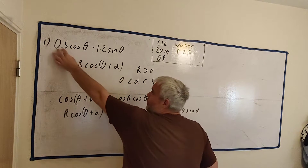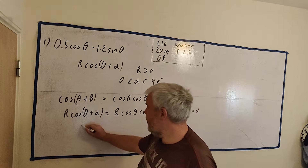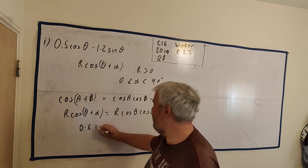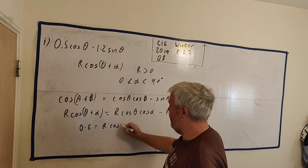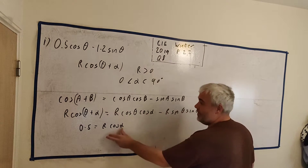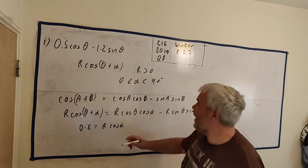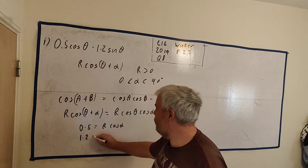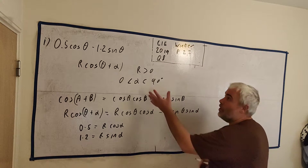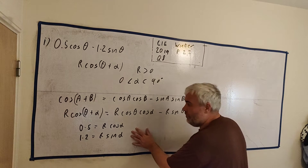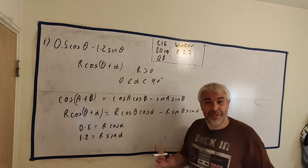It has cosine θ multiplied by something, and our original has cosine θ multiplied by something. In this case, the coefficient 0.5 is equal to r·cos α. Similarly, on the sine θ term, 1.2 just needs to equal r·sin α. And it matches up quite nicely. So all we have to do is solve this system — we don't know r or α — so it's a simultaneous equation.